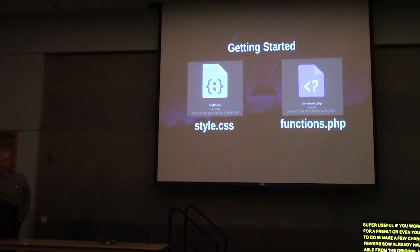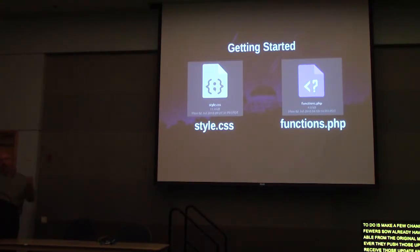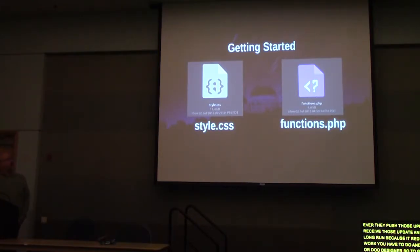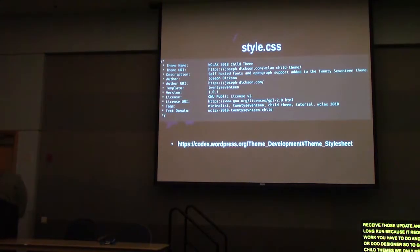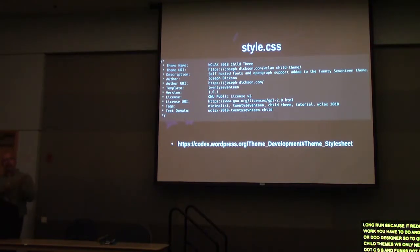To get started with child themes we really only need two files: style.css and functions.php. You'll put those in a folder which you then upload to your website. With style.css, this is the comment block — if you've ever looked at any WordPress theme before, this will look familiar. It tells WordPress what your theme does and how it functions, but with child themes it's a little bit different; there are a few additional bits of information.